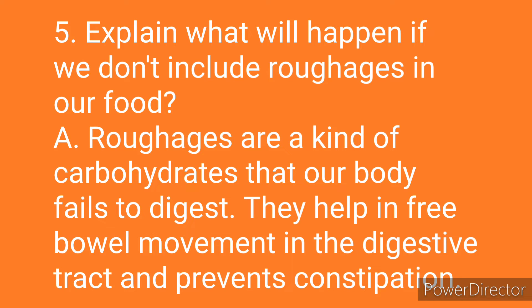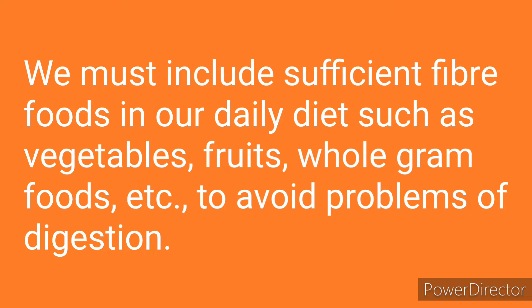Fifth question: Explain what will happen if we don't include roughages in our food. Answer: Roughages are a kind of carbohydrates that our body fails to digest. They help in free bowel movement in the digestive tract and prevent constipation. We must include sufficient fiber foods in our daily diet such as vegetables, fruits, whole gram etc. to avoid problems of digestion.